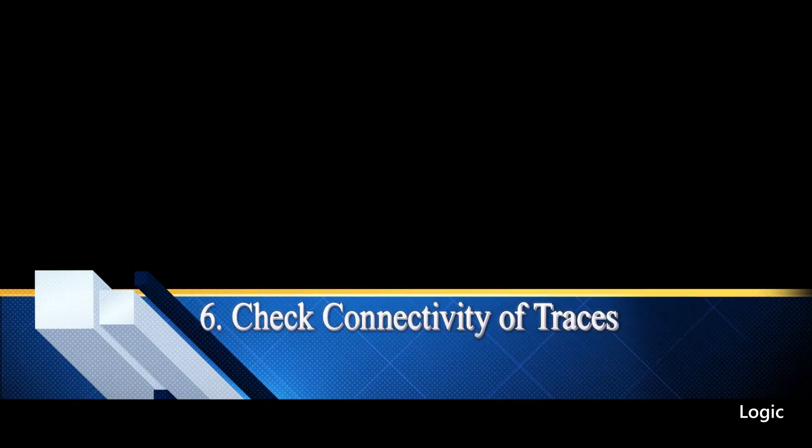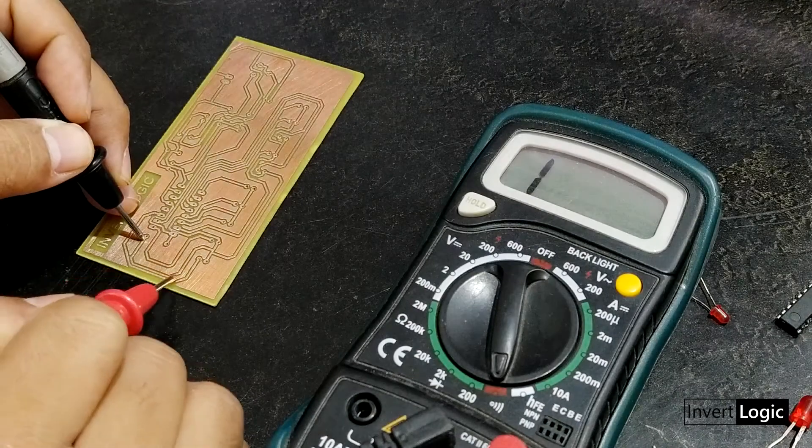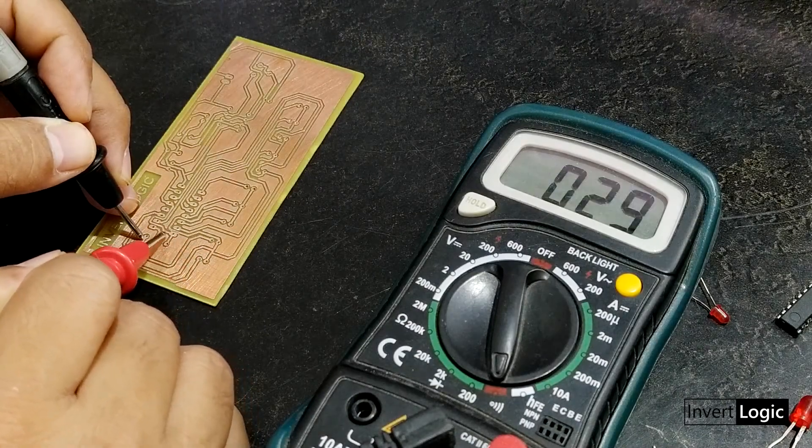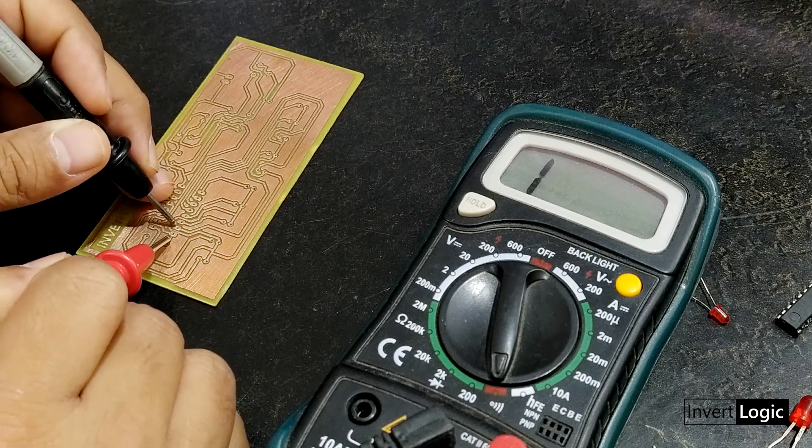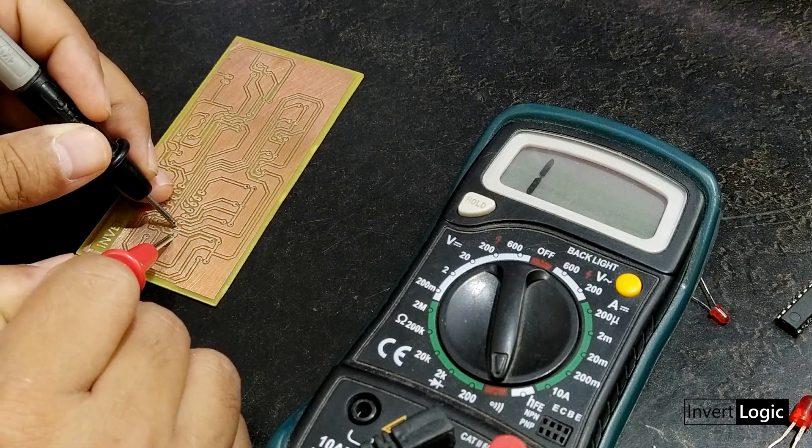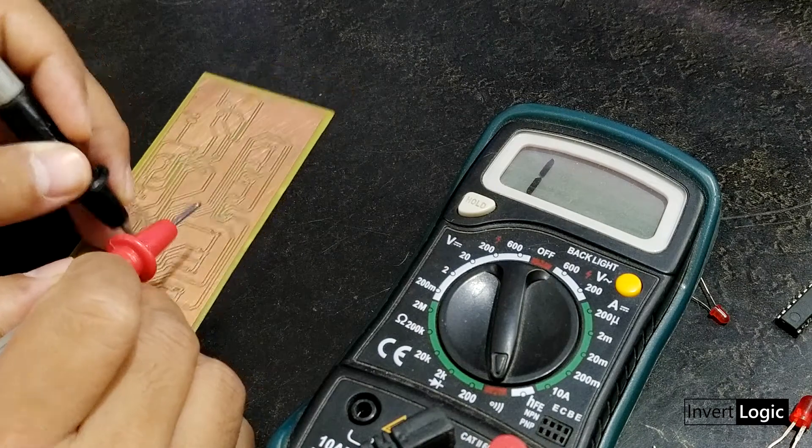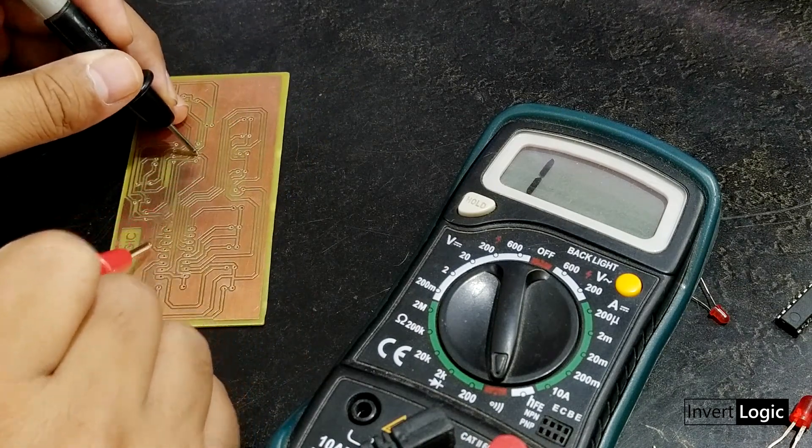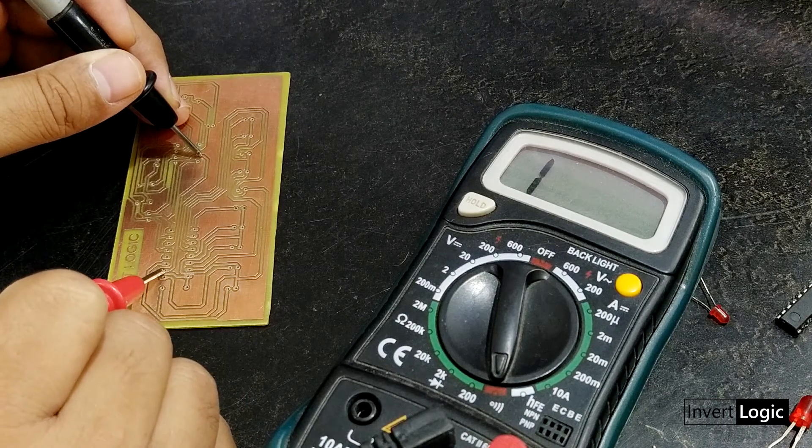6. Check connectivity of traces. Once your board is fully etched, the first thing you must do is to check the connectivity of all traces with your multimeter. This is important as this ensures the traces are not short and are properly etched. This debugging will make sure you don't have any etching related problems when you troubleshoot your board after full soldering.